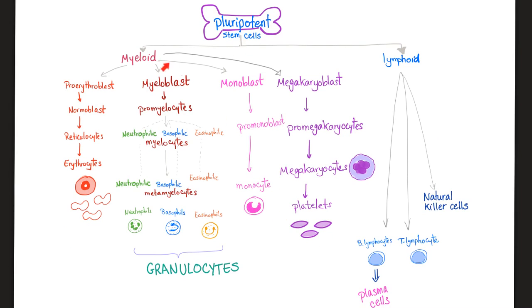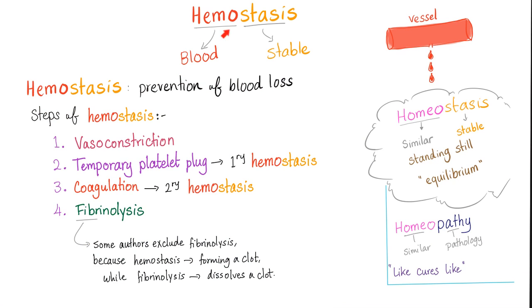Platelets came from myeloid stem cells, which came from pluripotent hematopoietic stem cells. As we have discussed in previous videos, hemostasis is prevention of blood loss — you stop the bleeding by forming a thrombus, a clot.